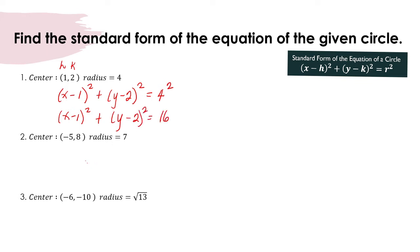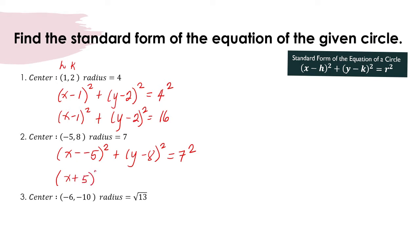For number 2, the equation becomes x minus negative 5 squared plus y minus 8 squared, is equal to 7 squared. Simplifying, x minus negative 5 gives us x plus 5. So the equation is x plus 5 squared plus y minus 8 squared is equal to 49.